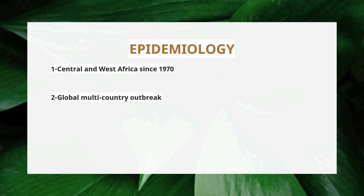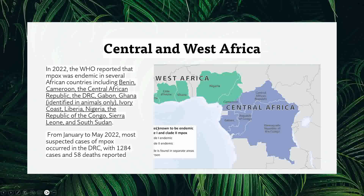What is the geographic distribution of monkeypox? It was first found in central and west Africa. This virus has been around since 1970 in Africa, and then recently in 2022 there was a global multi-country outbreak. Monkeypox is not an epidemic like COVID, but it is endemic in central and west Africa.